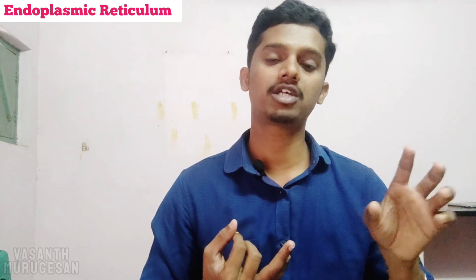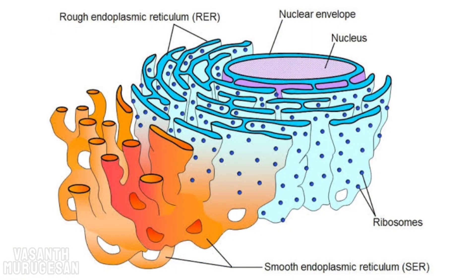Why is the Rough Endoplasmic Reticulum called rough? It has a rough surface because of the presence of granules containing ribosomes. That is why the structure is a little rough, and that is why it is called Rough Endoplasmic Reticulum. In Smooth Endoplasmic Reticulum, there are no ribosomal granules, so its surface is smooth.